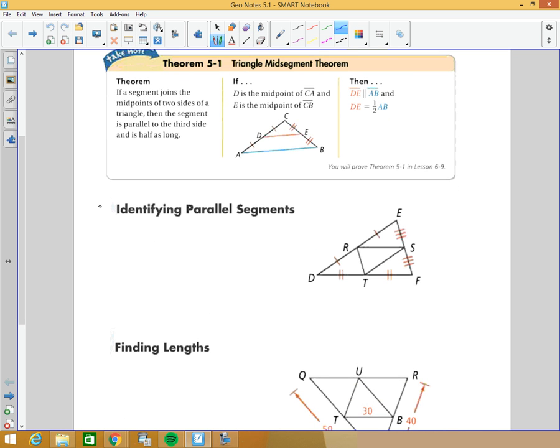So let's identify some parallel segments. If I take the sides, I'm going to say the sides of my triangle are DE, DF, and EF.